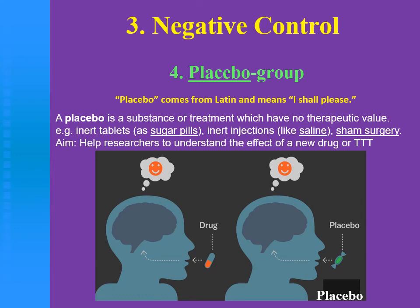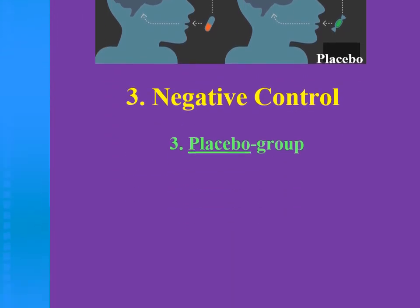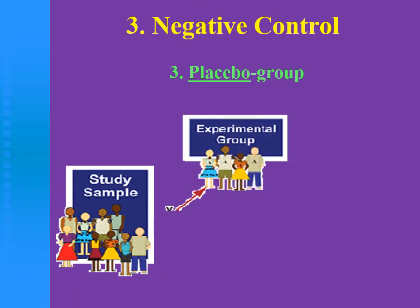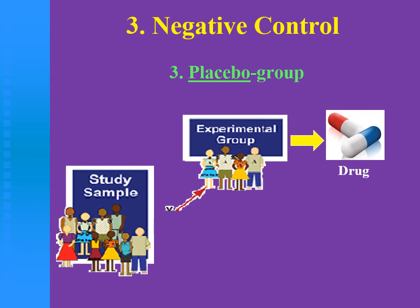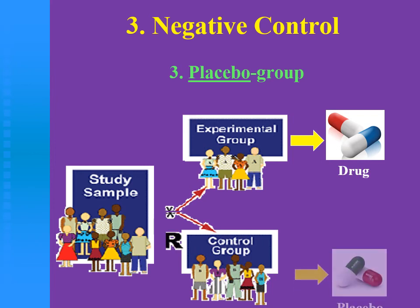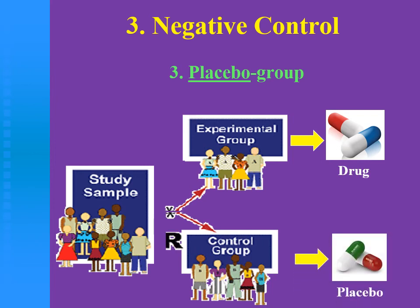We inject saline and not the active drug — or sham surgery, أفتح وأقفل من غير معمل حاجة. This group is used in clinical studies to determine or understand the effect of a new drug, which is compared with the placebo. In randomized controlled trials, the study sample is randomized into an experimental group — which receives the actual or active drug wanted to be tested — and a control group which is the placebo group that receives placebo.